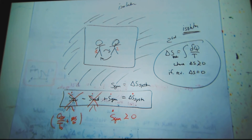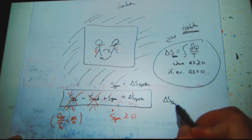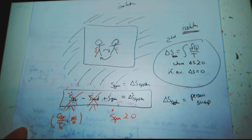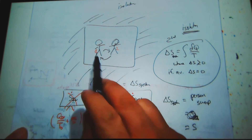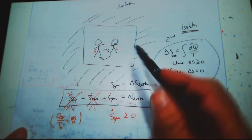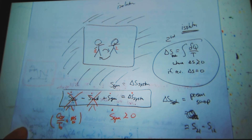So if the entropy generated has to be greater than or equal to zero, and state two represents the person swap — state one was initial — then S-gen equals S of state (2,1) minus S of state (1,2). So I went through half this process, and the change in entropy in my system is such. The second law says for an isolated system, entropy generated has to be greater than or equal to zero.